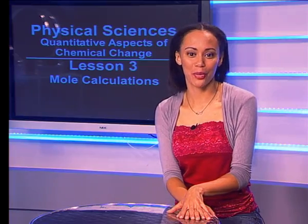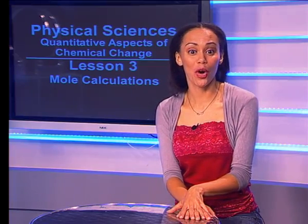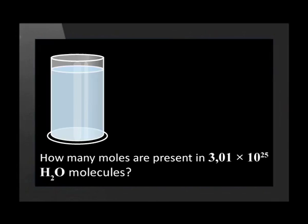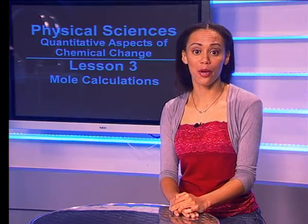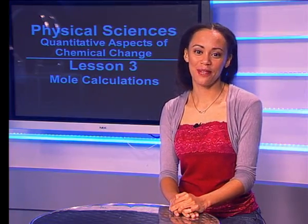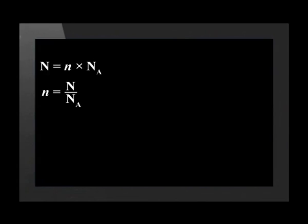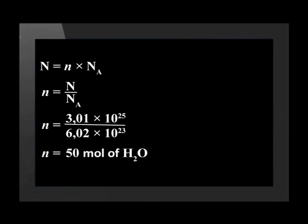Let's do one more example — why don't you try this one on your own? How many moles are present in a container containing 3.01 × 10²⁵ water molecules (H₂O)? First, we rearrange the formula so that the number of moles is the subject: n equals the number of particles divided by Avogadro's number. Substituting the known values, we get an answer of 50 moles of water.